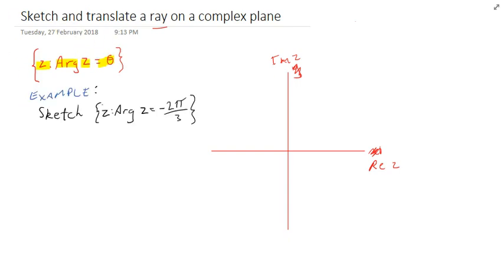Let's sketch one. If I want to sketch the ray z argument z equals negative 2 pi on 3,